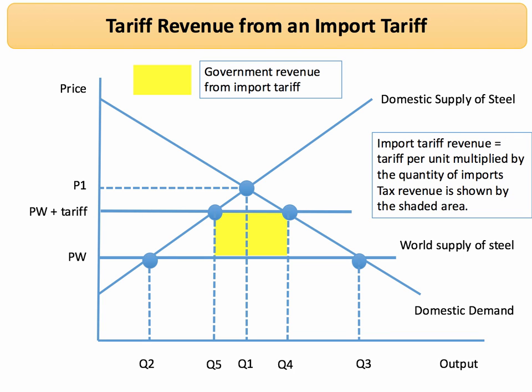That reduced quantity of imports is still taxed, and the yellow area on the diagram shows the government's tax revenue from the tariff. That equals the tariff per unit — whatever it is, $100 or $200 per unit — multiplied by the quantity of imports, which in this case is Q5 to Q4.